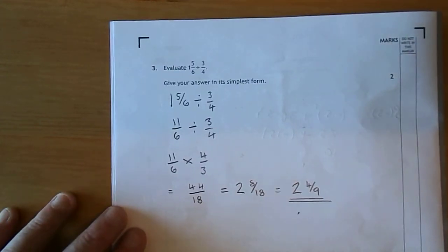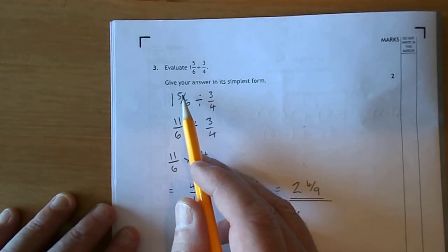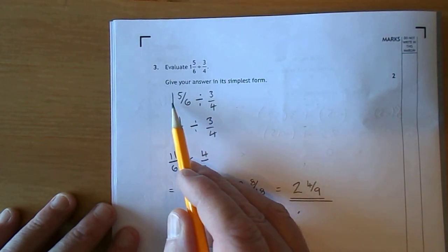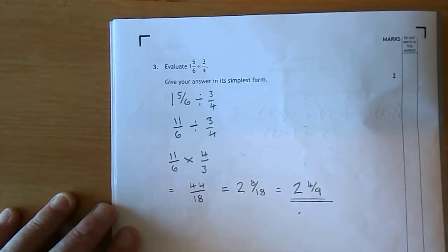1 and 5 sixths, you should always change that into an improper fraction. How do we do that? Well, we do 6 times 1, or 6 add 5 gives 11, that's the easy way to do that.